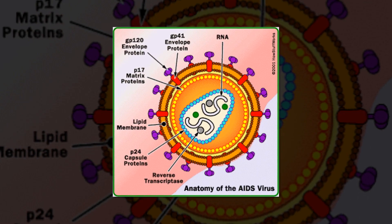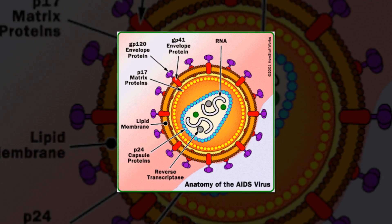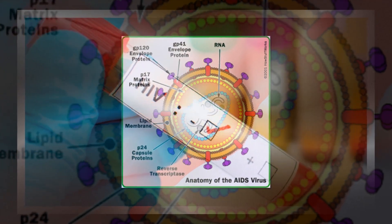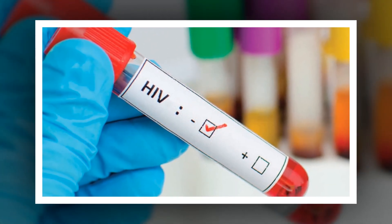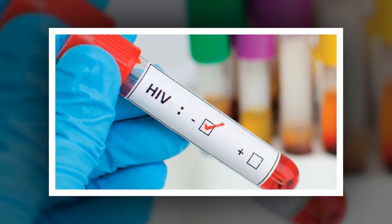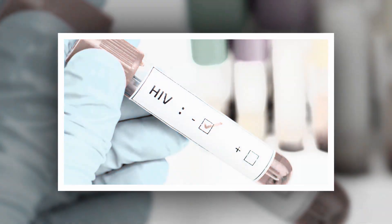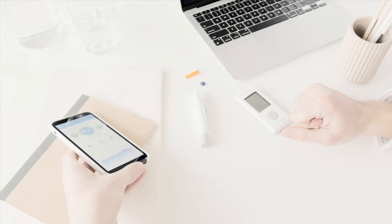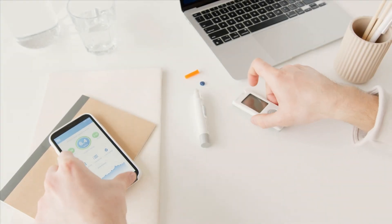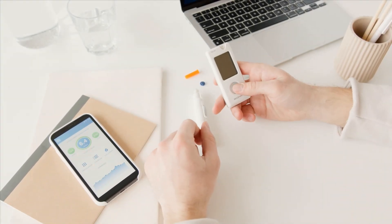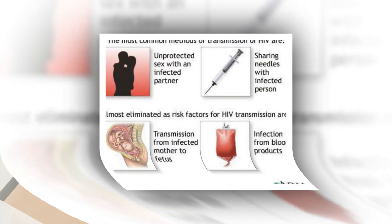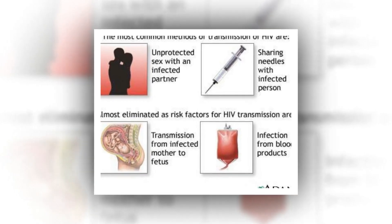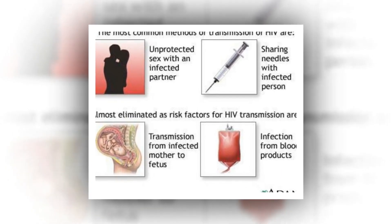HIV and AIDS-related cancers: people with HIV have a higher chance for three types of cancer. If you have HIV and find out you have one of these cancers, it may mean that your HIV has advanced to AIDS. Kaposi sarcoma — this cancer brings purple skin patches on the legs, feet, or face. It forms in your blood vessels and also occurs in organs like your lungs or digestive tract.